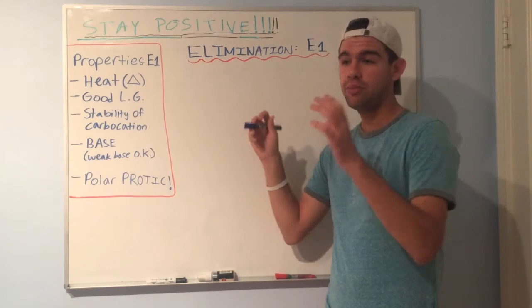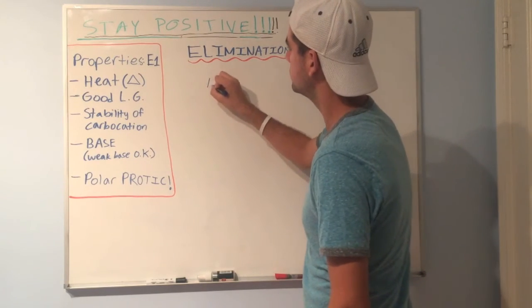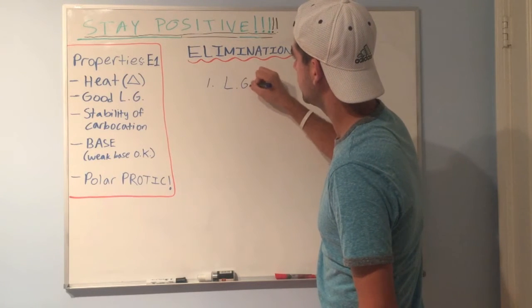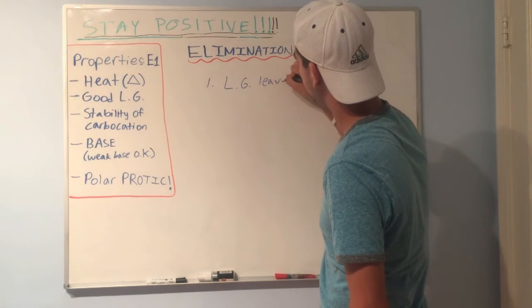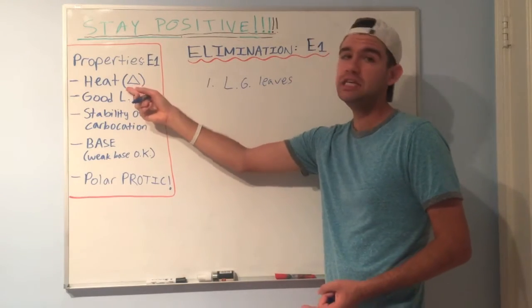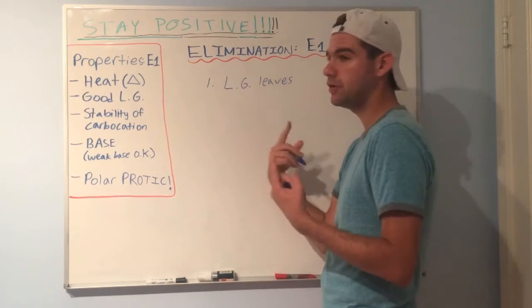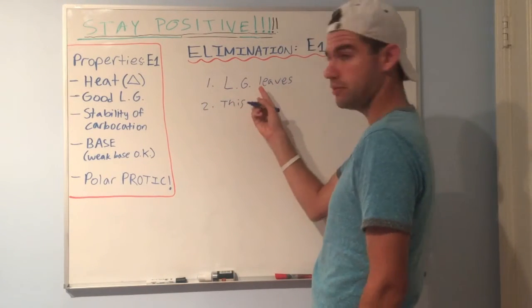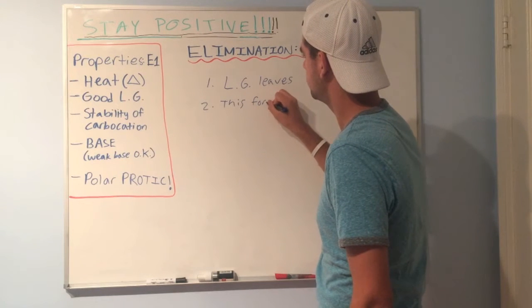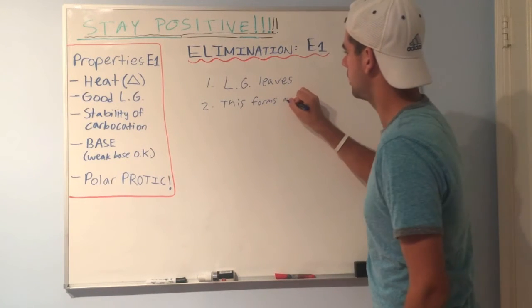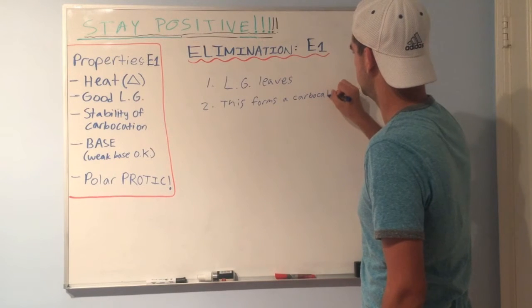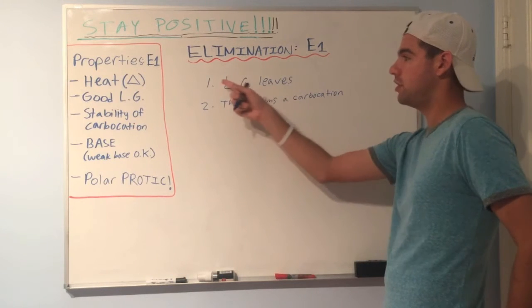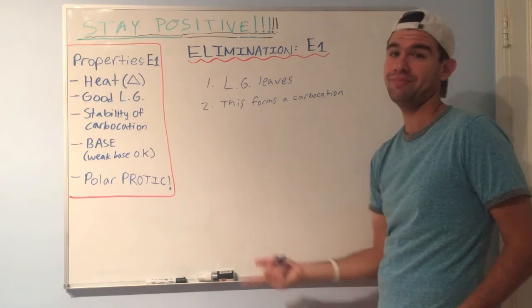First I want to go over the basic mechanism for E1. The first thing that happens in any E1 reaction is the leaving group leaves. This will happen completely on its own in the presence of heat, just like in SN1. Leaving group leaves, and this forms a carbocation. Carbocations are really unstable, so this will be the rate-determining step.